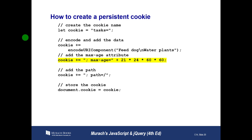To create a persistent cookie — one that will live after the browser closes — we do the same thing: start with 'tasks=', concatenate the encoded value of 'feed dog' and 'water plants', but this time we also concatenate '; max-age=' followed by 21 * 24 * 60 * 60, which gives us the number of seconds in 21 days (1,814,400 seconds). Then we add the path. Again, all the string processing builds up the cookie string, and then we assign it to document.cookie.